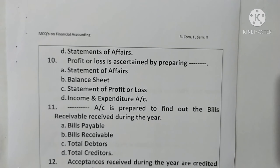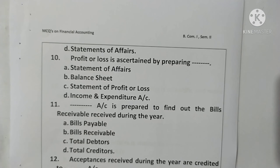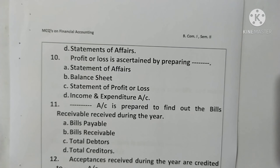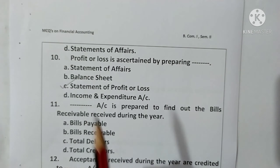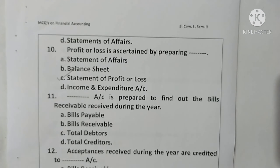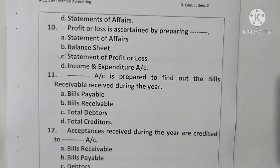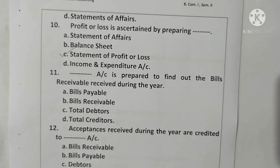Question 10: Profit and loss is ascertained by preparing a statement of profit and loss account — also called income and expense account. Option C is correct; the statement of profit and loss account is prepared to find out the profit or loss. Question 11: The bills receivable account is prepared to find out bills receivable received during the year. Option B is correct.